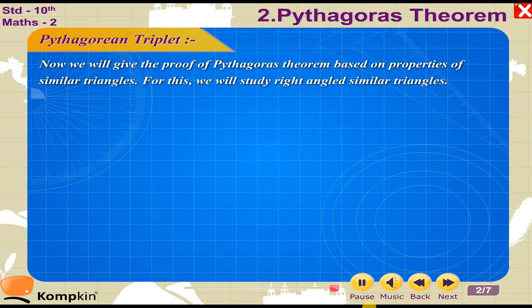Now we will give the proof of the Pythagorean theorem based on properties of similar triangles. For this, we will study right-angled similar triangles.